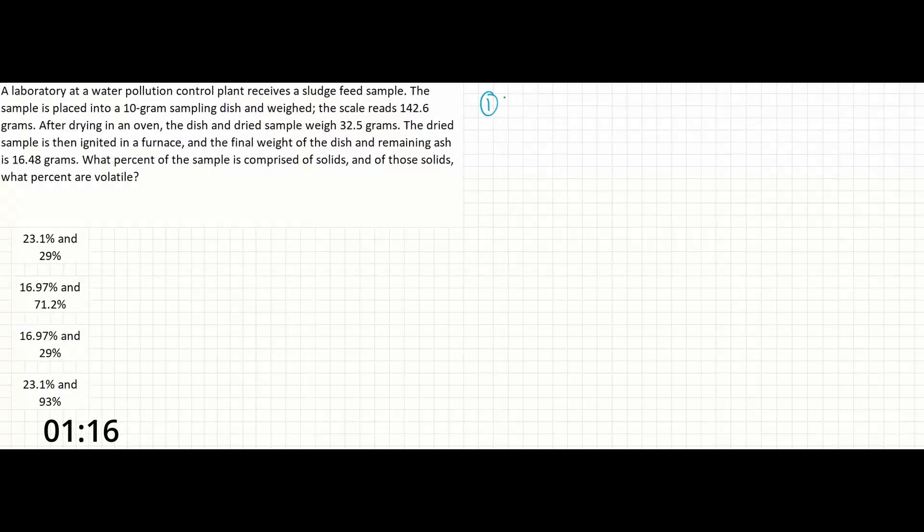So first, the wet weight of the sample is as follows. We're going to take the 142.6 grams and subtract out the weight of the dish, leaving us with 132.6 grams.